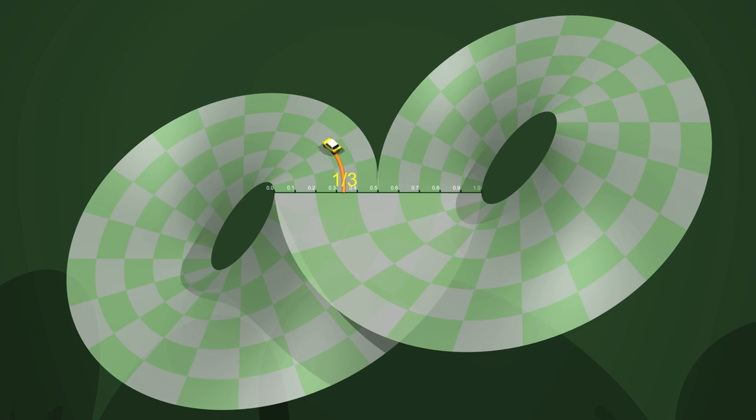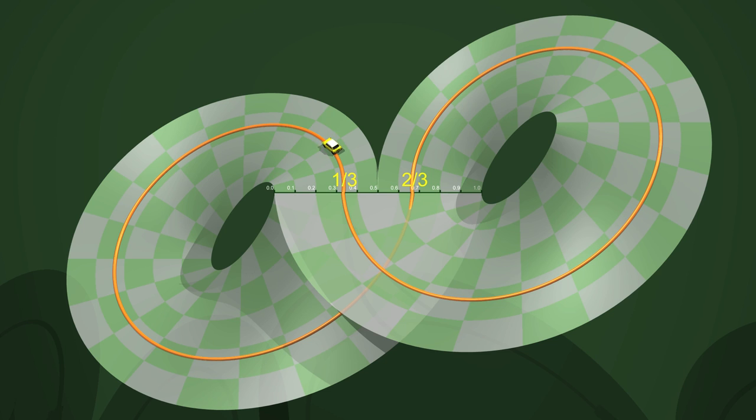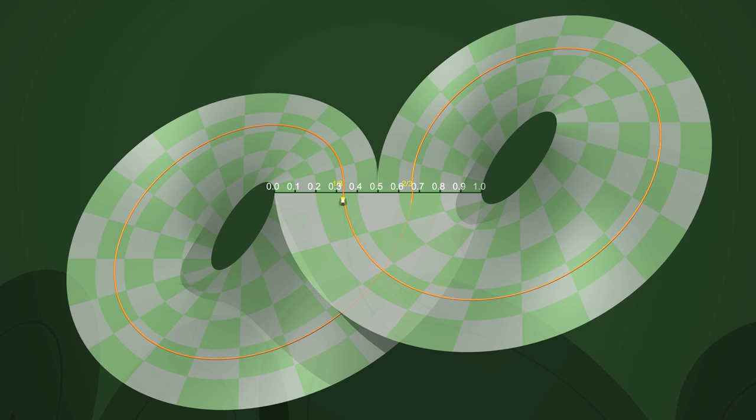Look, we start off from 1 third. We arrive at 2 thirds. And then we arrive at 4 thirds. But we must subtract 1, that is to say, we arrive at 1 third. So, we are back to our original starting point after 2 rounds. Thus, we have a periodic trajectory of period 2.